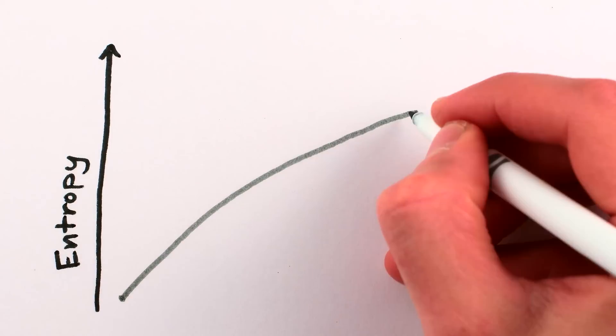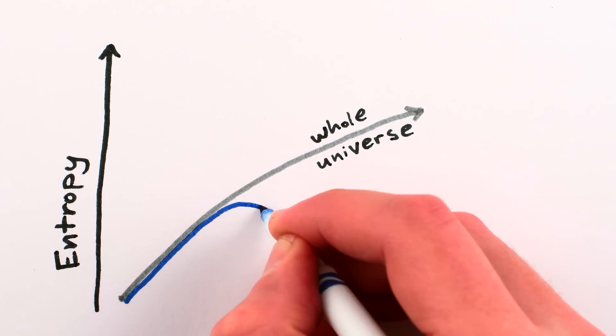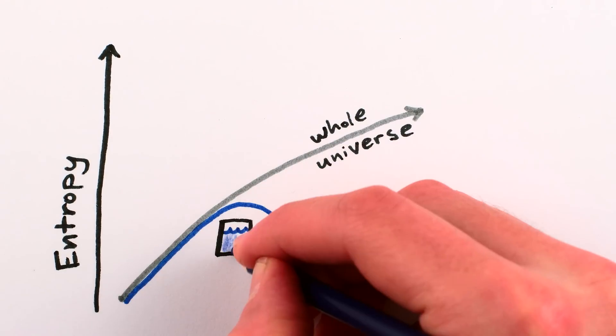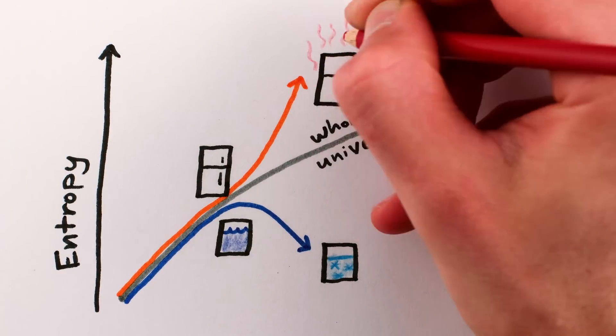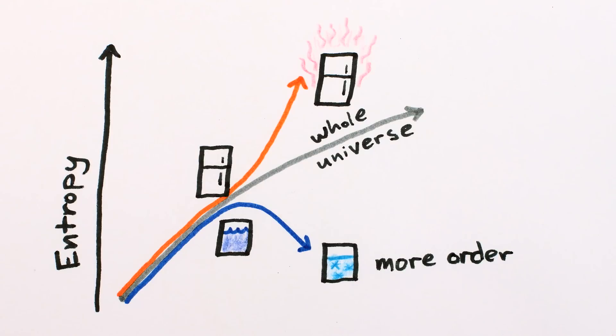Of course, entropy can go down in part of the universe. You can trade a decrease of entropy in one place, like cooling water so that it crystallizes into ice, for an equal or larger increase in entropy somewhere else, like heating the back of your fridge. Order increases here, but only at the cost of decreasing order there.